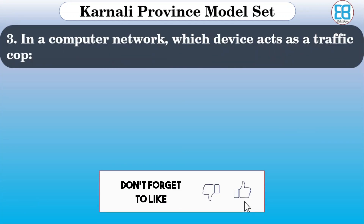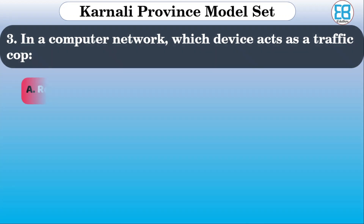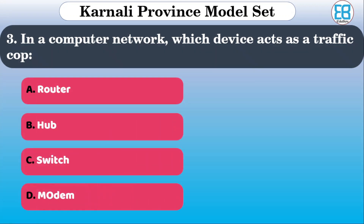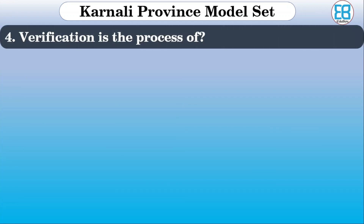In a computer network, which device acts as a traffic cop? The options include hub, router, and switch. The correct option is switch.